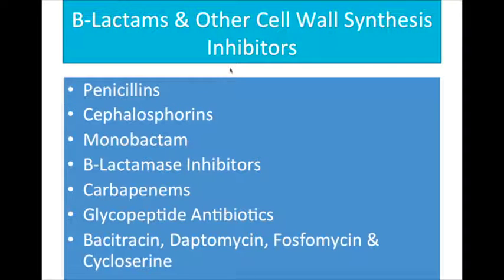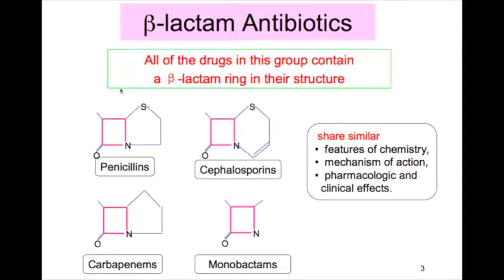For the cell wall synthesis inhibitors, we have the penicillins, cephalosporins, monobactam, beta-lactamase inhibitors, carbapenems, glycopeptide antibiotics, bacitracin, zeptomycin, phosphomycin, and cycloserine. Under the cell wall synthesis inhibitors, we have the beta-lactam antibiotics, which includes the penicillins, cephalosporins, carbapenems, and monobactams.